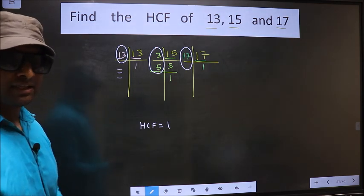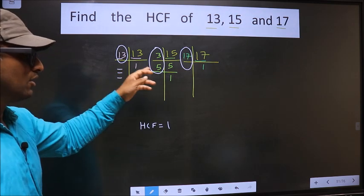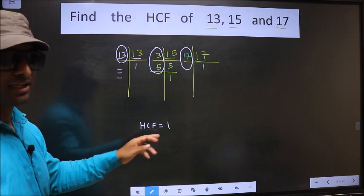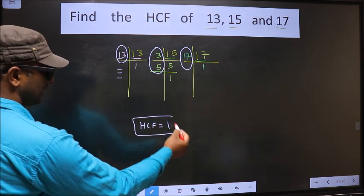I repeat: whenever you don't have any number present in all the three places, you should take HCF to be 1. So this is our HCF.